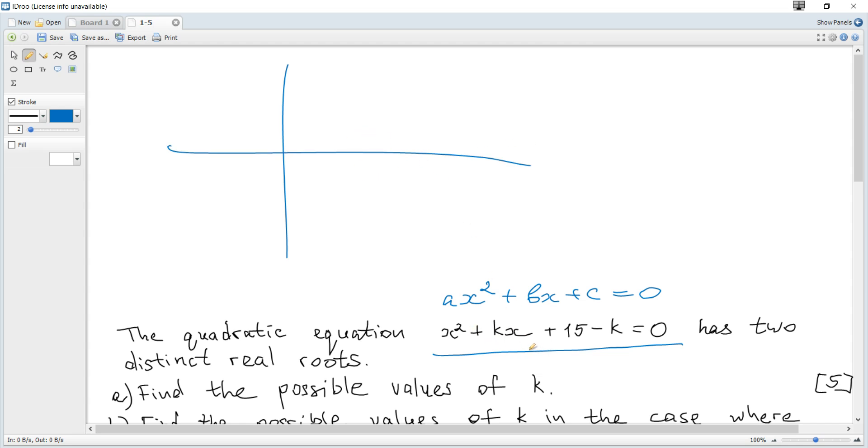The graph of this function looks like a concave up parabola. And for two roots to be positive, it means what? There are two roots, smaller and greater.